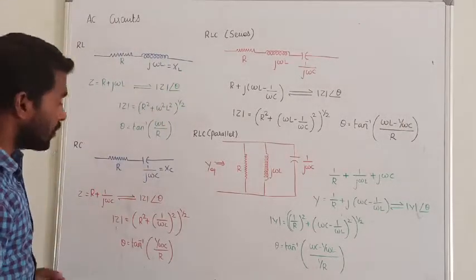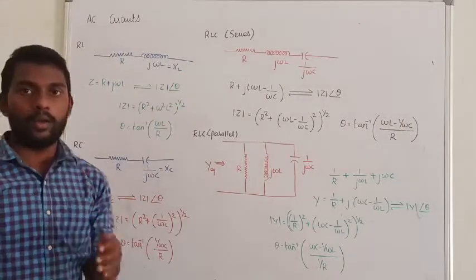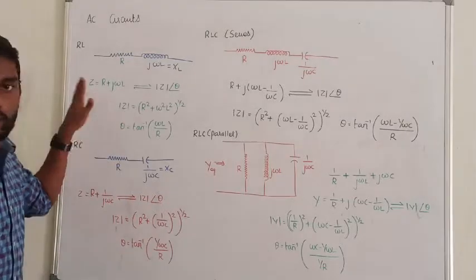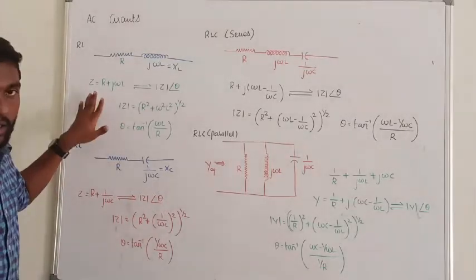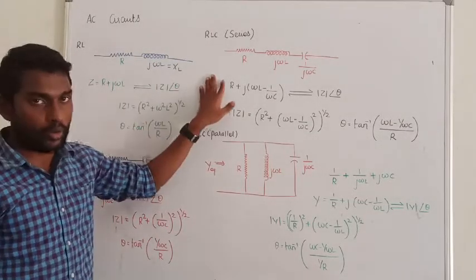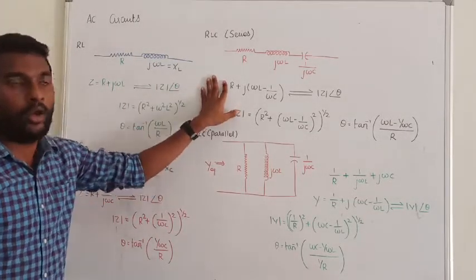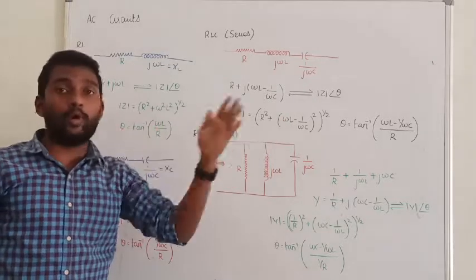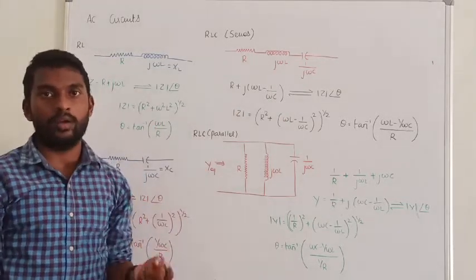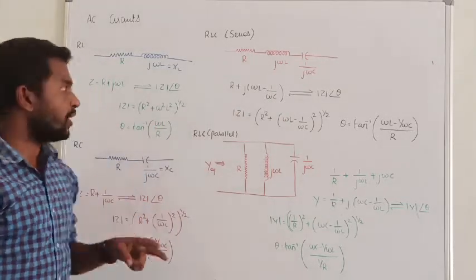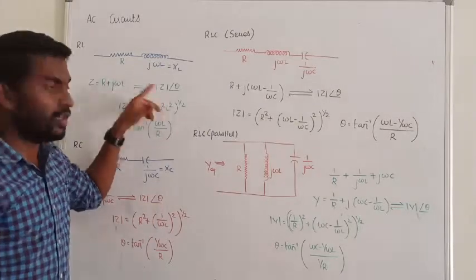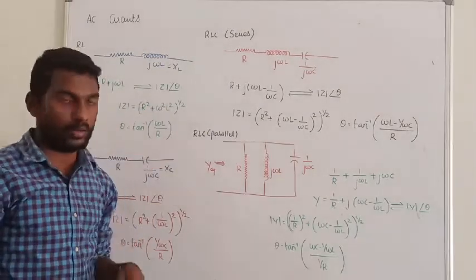Why is the conversion the most important thing? To solve problems, you can keep all quantities only in rectangular form or you can keep them in polar form. The conversion between rectangular and polar is most important — this is the key to solving problems.